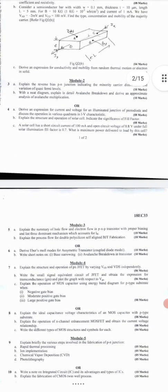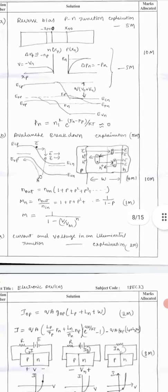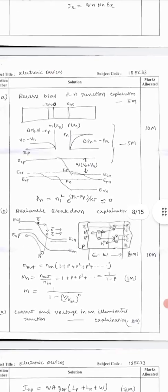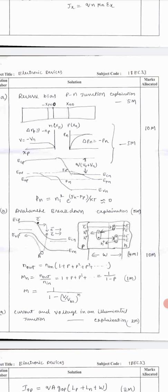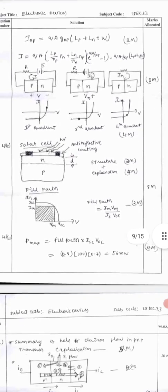Third A question is explain the reverse bias p-n junction indicating minority distribution and variation of quasi Fermi levels. Three A, ten marks is given. For ten marks, look at how the answer should be written. Reverse bias p-n junction explanation with the diagram five marks, and all these diagrams includes five marks. Like this, avalanche breakdown is explained for ten marks.